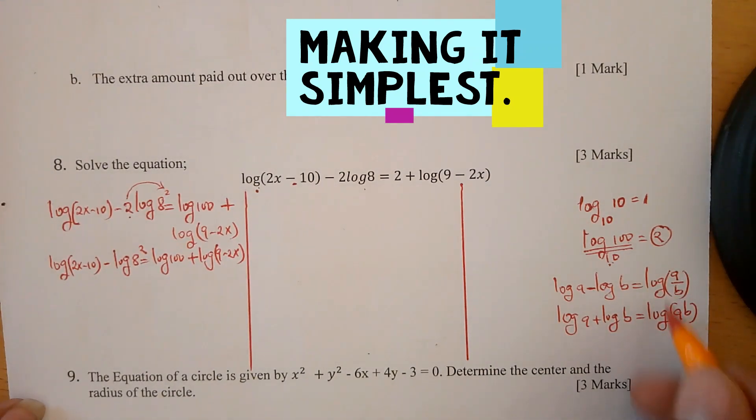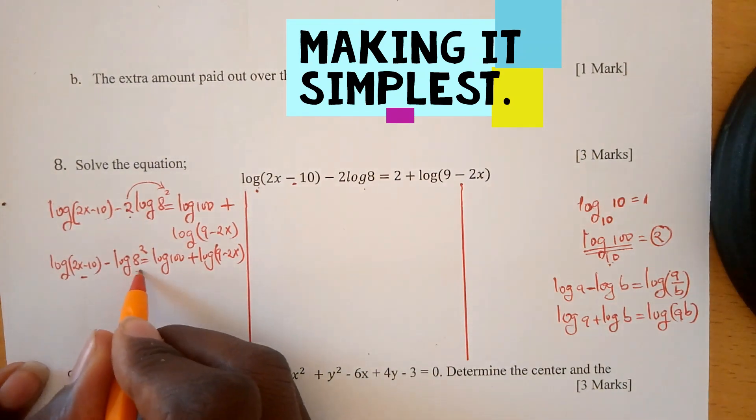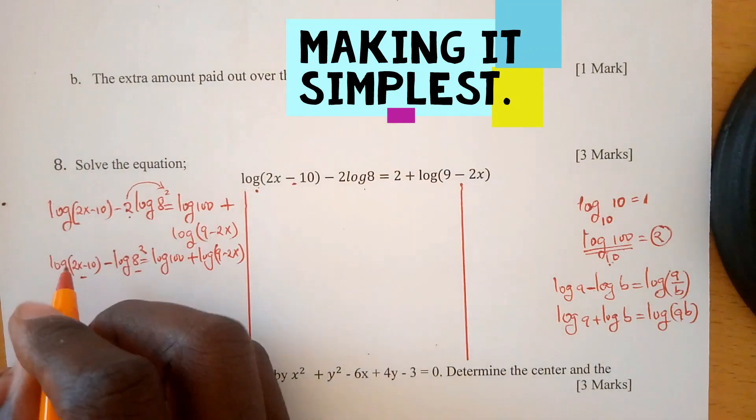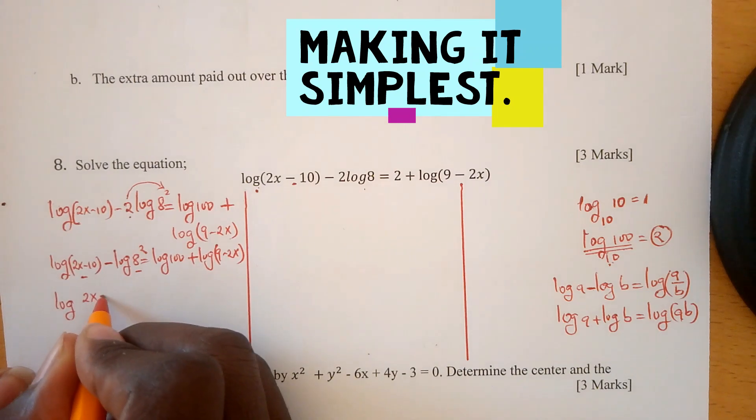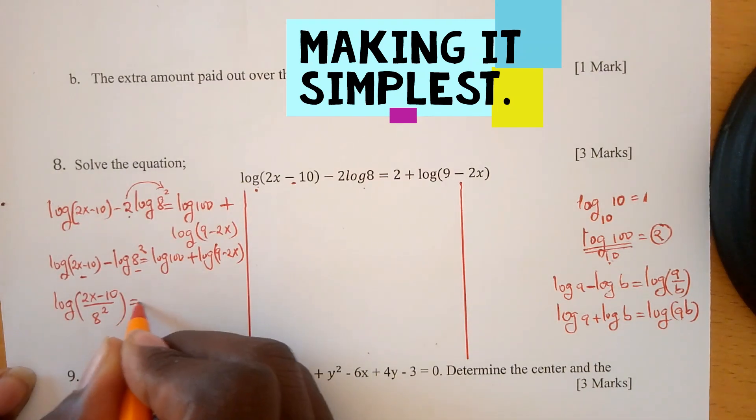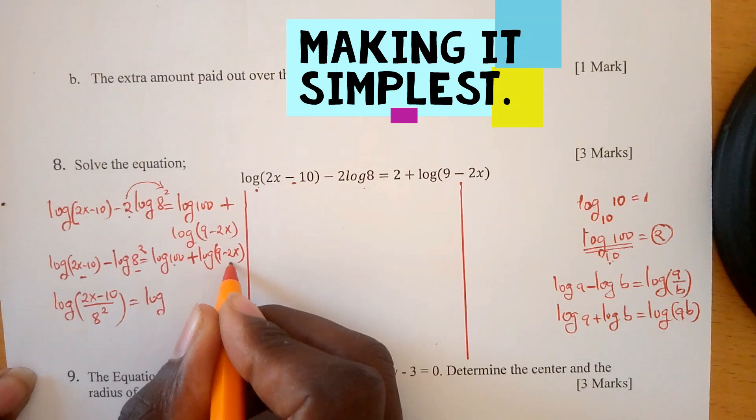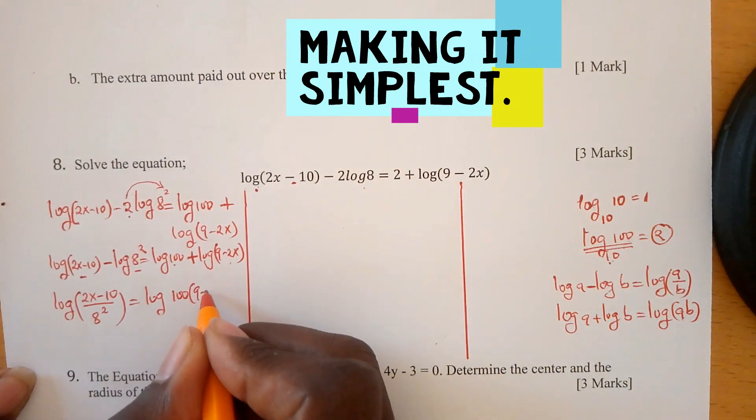We're going to apply these rules. We divide because of the subtraction: log((2x - 10)/64) equals log(100 × (9 - 2x)), since this is addition we multiply.